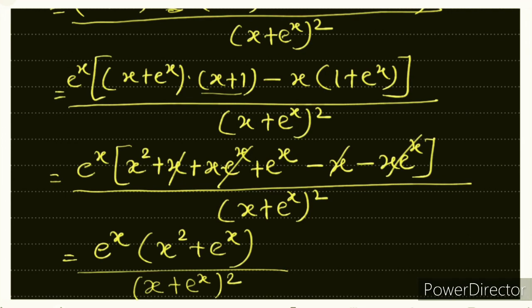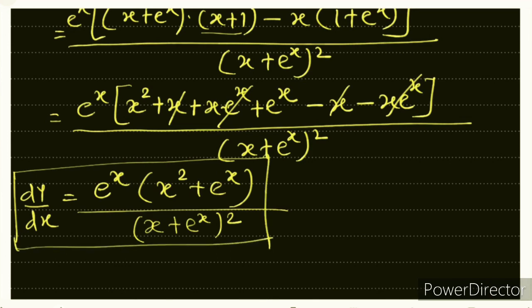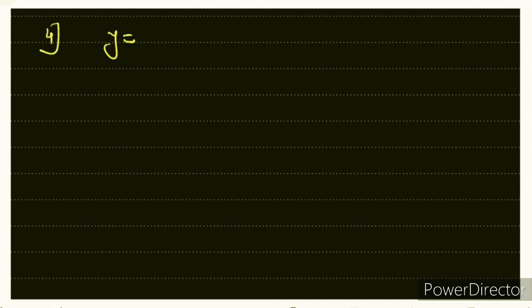I hope students, this is clear — how the u/v rule is applied. Now for sum number 4: y = (x·log x) / (x + log x). Please pause the video and solve this sum yourself, then check with me. I know you can solve it.